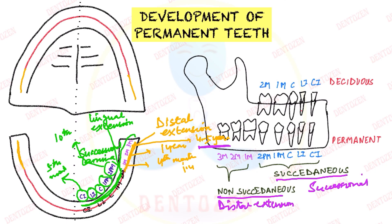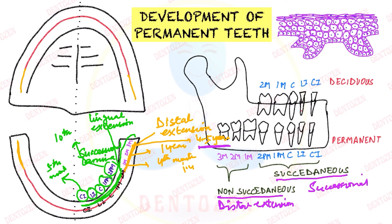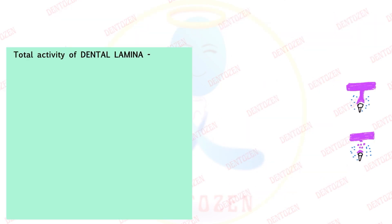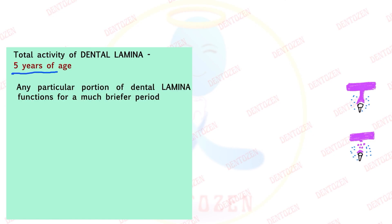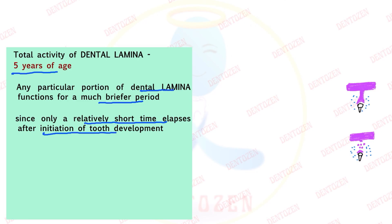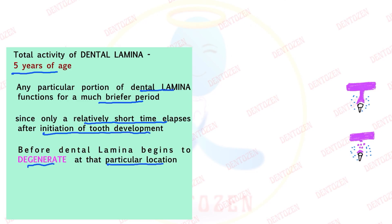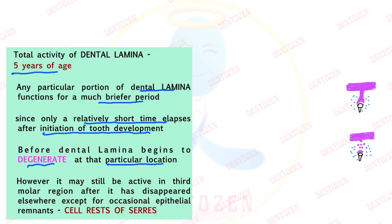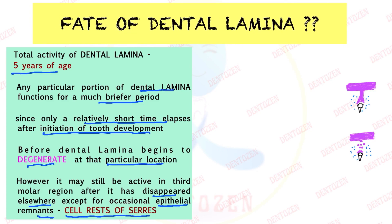After all the teeth have developed in different regions, the dental lamina will break down. The dental lamina will be present in the third molar region only by the age of five years; everywhere else it will disappear and degenerate. So that is the fate of dental lamina — the total activity of dental lamina is up to five years of age. At any particular location, the dental lamina functions for a very brief period. It is only in the third molar region that dental lamina may still be active after it has disappeared elsewhere in the mouth.